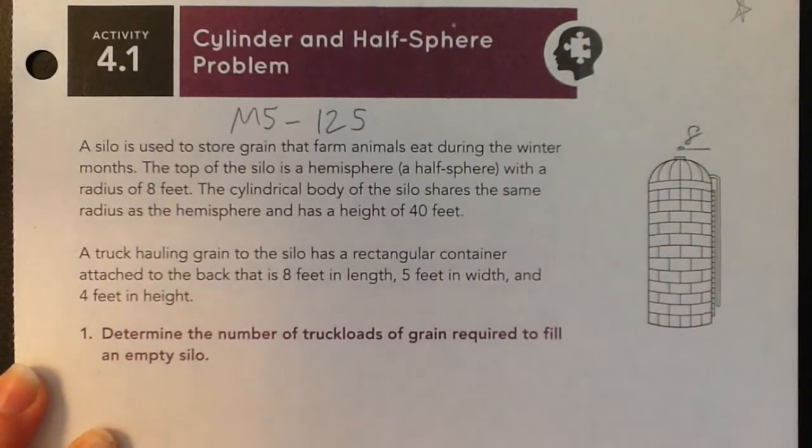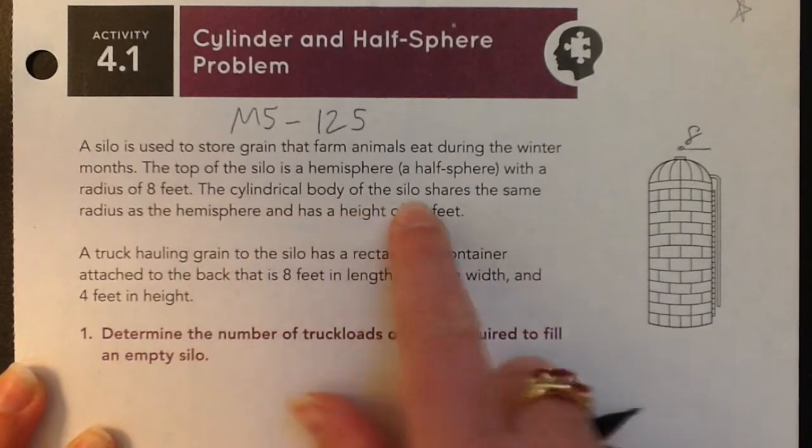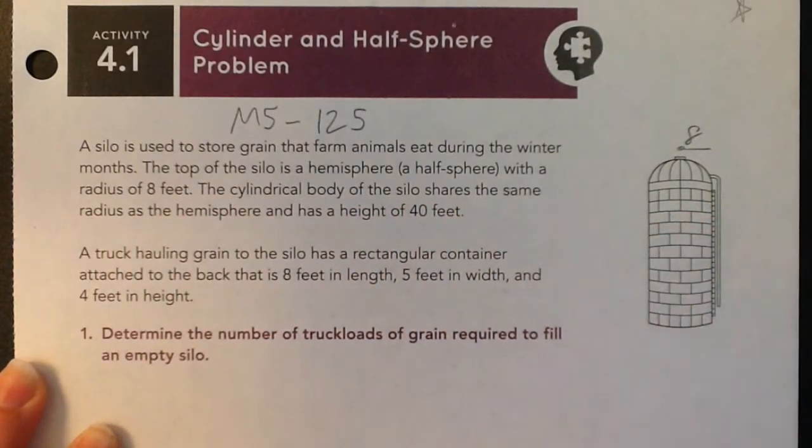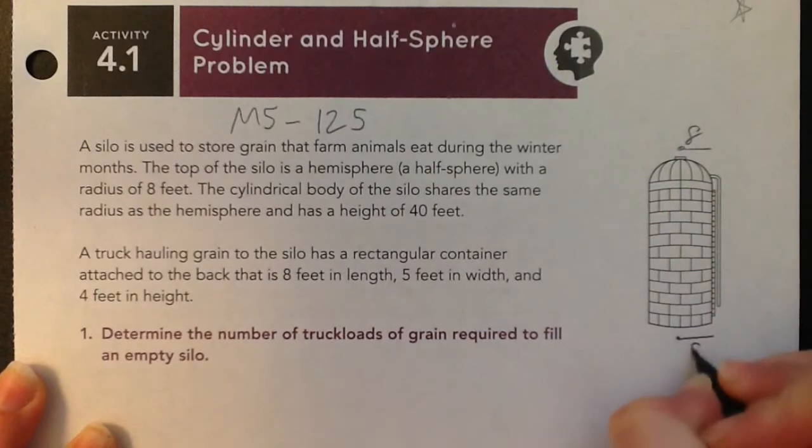The cylindrical body of the silo shares the same radius. So obviously the circle here is also 8. And it has a height of 40 feet.